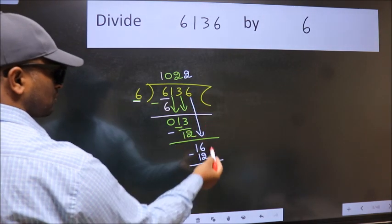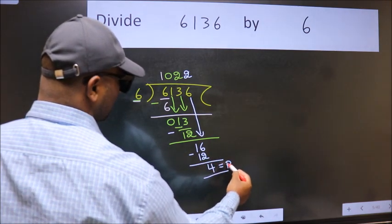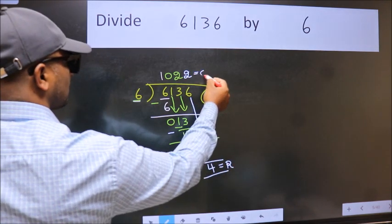No more numbers to bring it down. So we stop here. This is our remainder and this is our quotient.